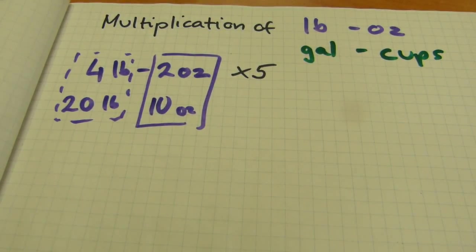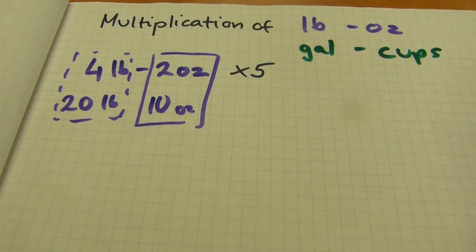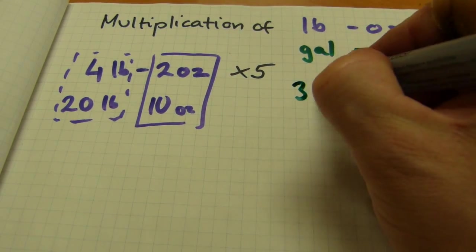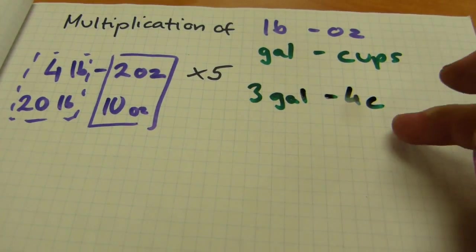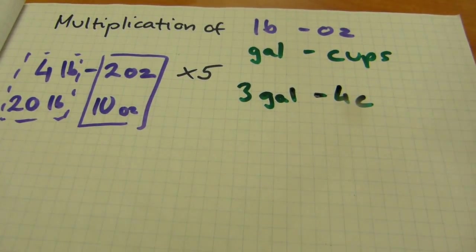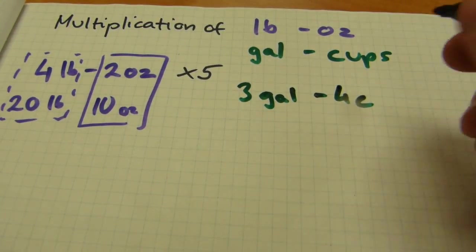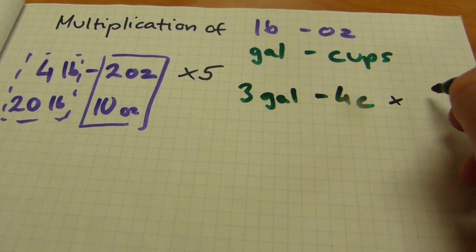How this works with gallons and cups is pretty much the same. Say, we have three gallons and four cups. And that's again not subtraction, that's multiplication. And let's multiply it by another number. How about three?